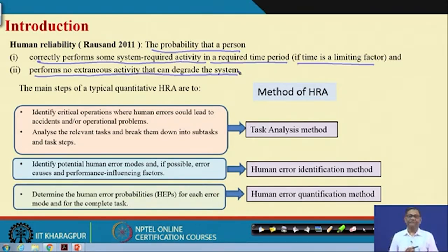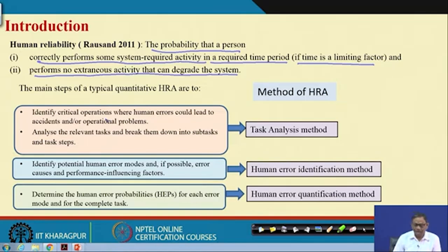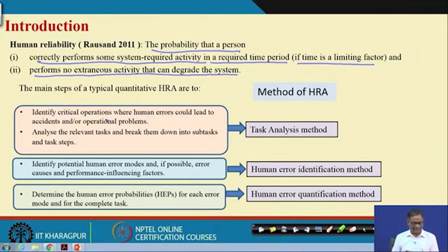In order to quantify human reliability, you are required to do primarily a few things. First, you must do a task analysis to know the relevant tasks that the operator or worker is going to perform. Then you analyze those relevant tasks, concentrating on what is important for performing the operation. For every elemental task you find out the human error modes and also find out the error causes and performance shaping factors.